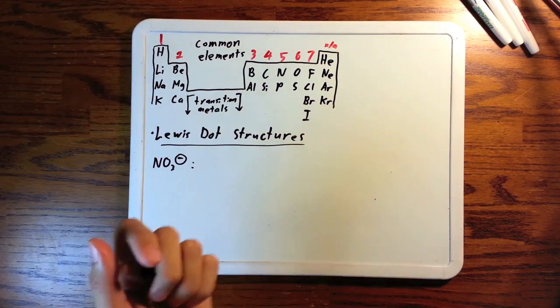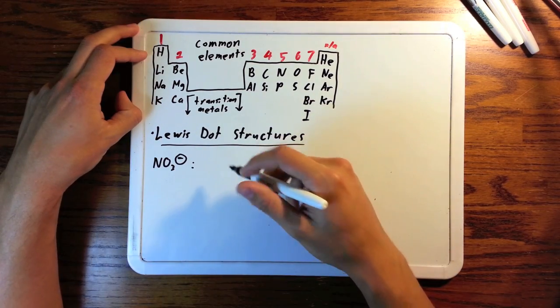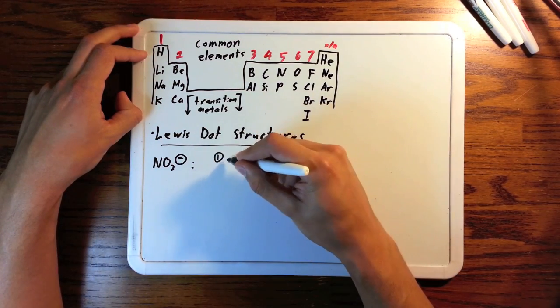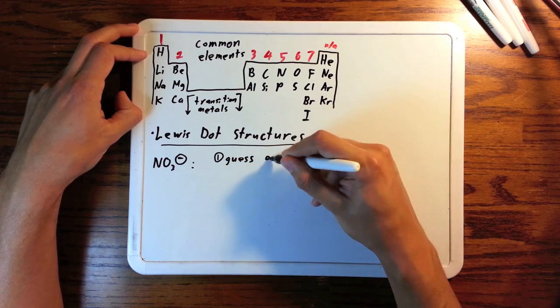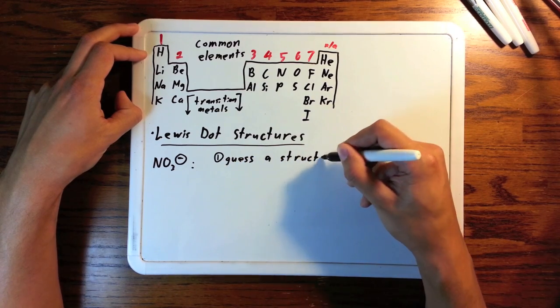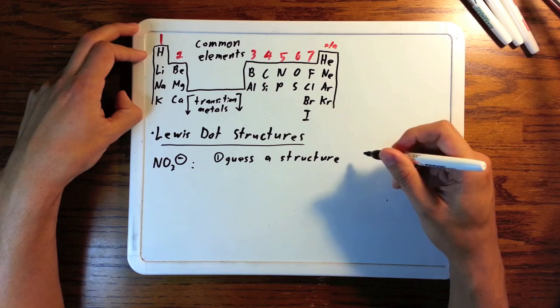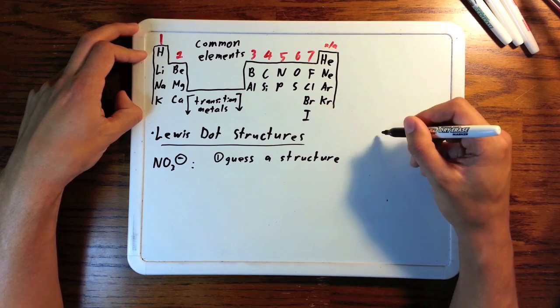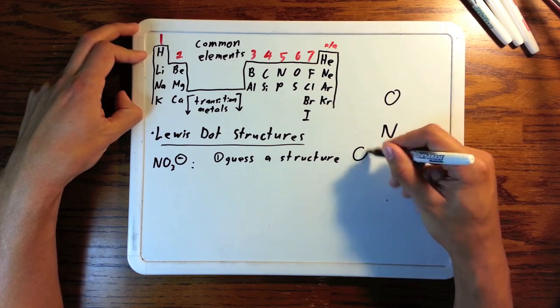First of all, we'll look at nitrate. Now, the first step in drawing any Lewis dot structure is guess a structure. I'd say very generally, put the odd atom out in the middle, see if that works. If there are multiple possibilities, draw all of them and work on all of them.